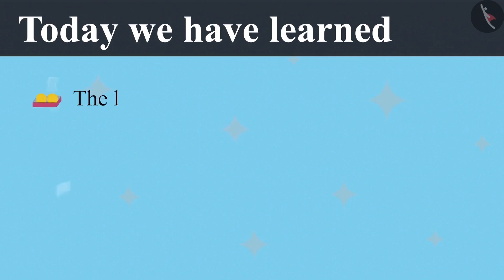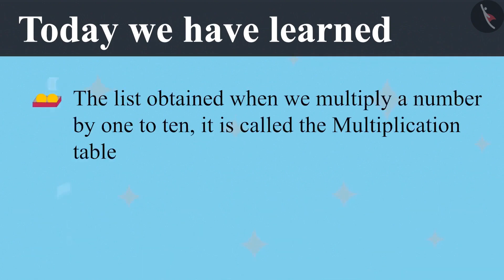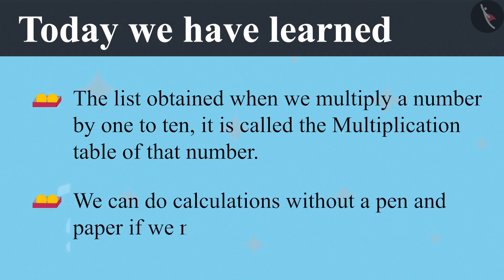Today we have learned that the list obtained when we multiply a number by 1 to 10, it is called the multiplication table of that number. And we can do calculations without a pen and paper if we memorize tables.